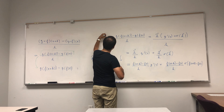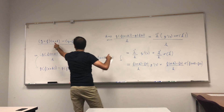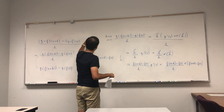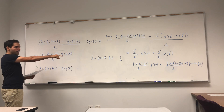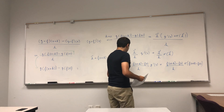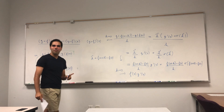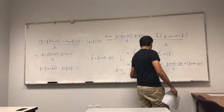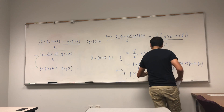Now we want to let h go to zero. The left-hand side is the difference quotient of g composed with f, so it goes to g composed with f prime of x. On the right-hand side, f of x plus h minus f of x over h goes to f prime of x, times g prime of y — which is g prime of f of x — times f prime of x. And we just need to hope this second term goes to zero.